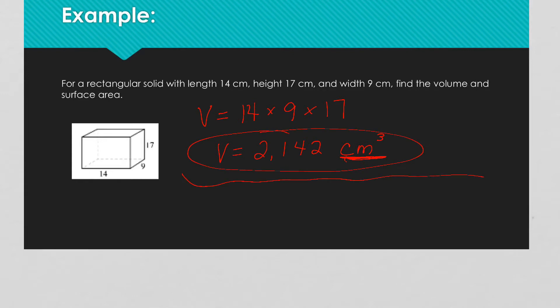Now for the surface area of this thing, we want to take each side. If I've got the front of this box, I've got two of those because there's one on the back side. And that one is 14 times 17.